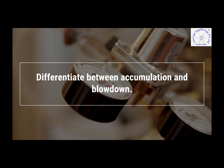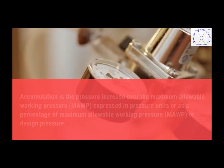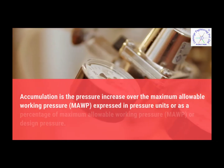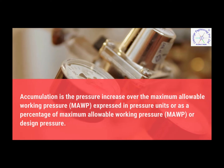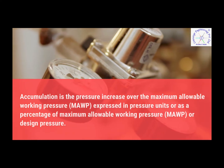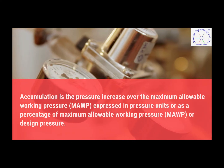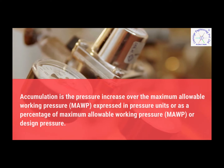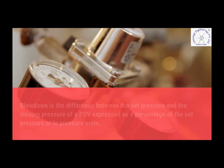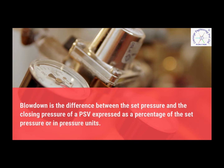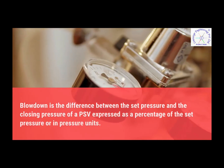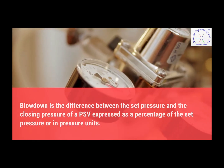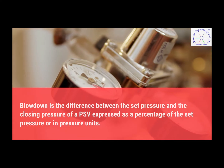Differentiate between accumulation and blowdown. Accumulation is the pressure increase over the maximum allowable working pressure, expressed in pressure units or as a percentage of maximum allowable working pressure or design pressure. Blowdown is the difference between the set pressure and the closing pressure of a PSV, expressed as a percentage of the set pressure or in pressure units.